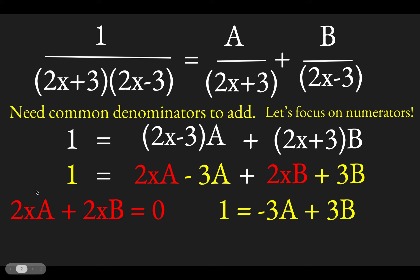Well, so if we sort of solve these two things, the one on the left, you can see that a has just got to be minus b. Well, if you put minus b in for a, you can see we would get 3b plus 3b equals 1. So 6b equals 1.